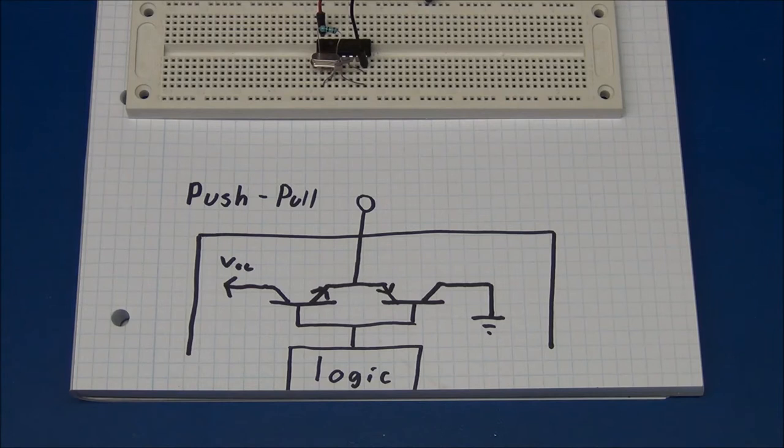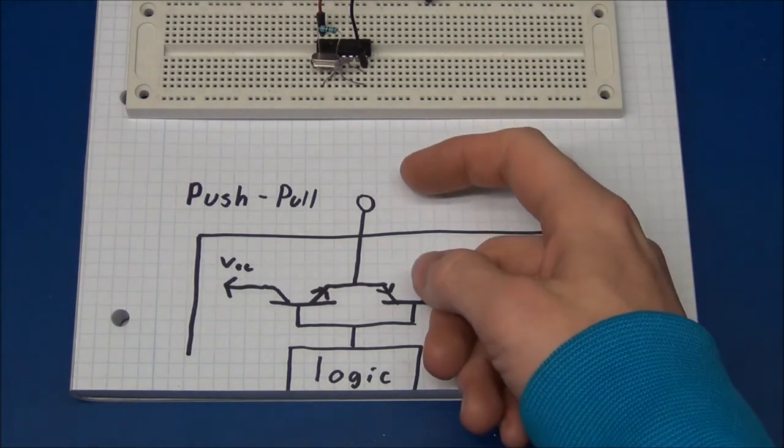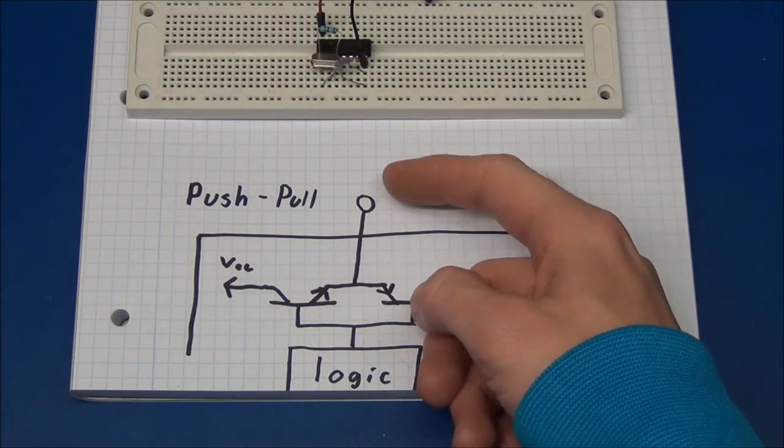So the 4069 chip that I was using have what's called a push-pull output. This means that you can either sink current or source current with the chip.